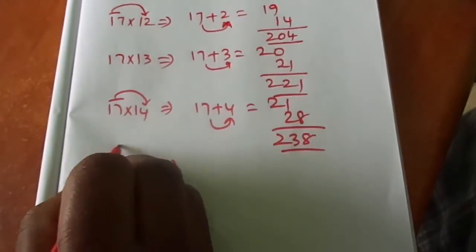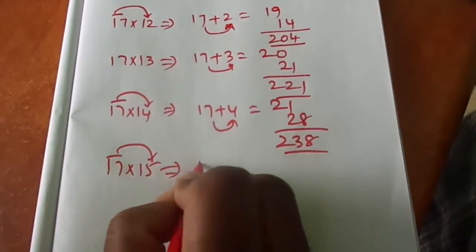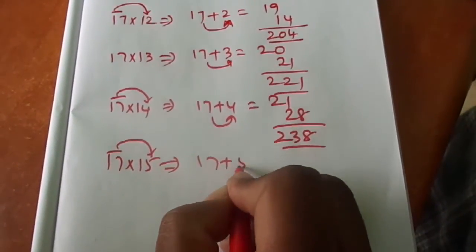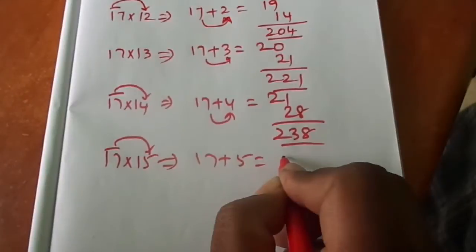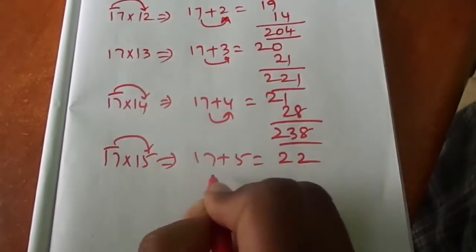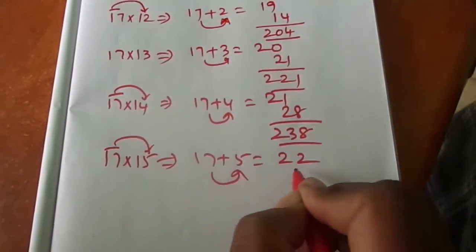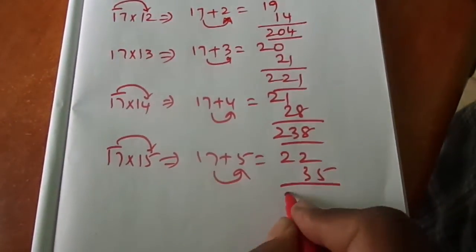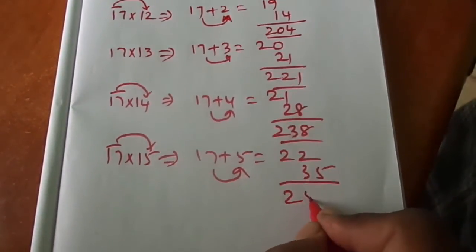17 15s: 17 plus 5 is 22. 7 fives are 35. That is equal to 255.